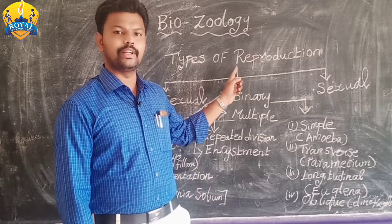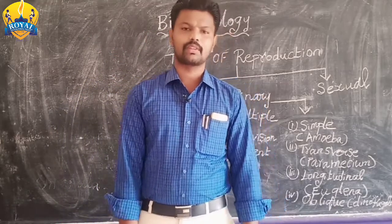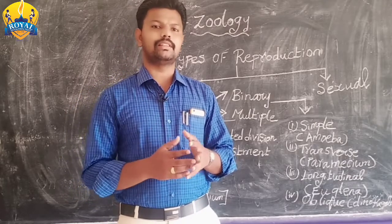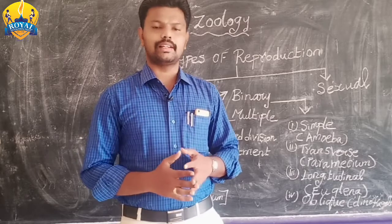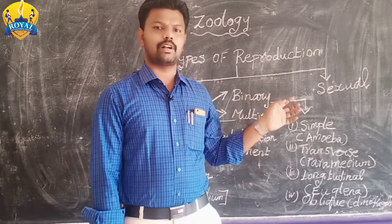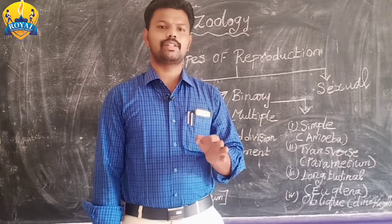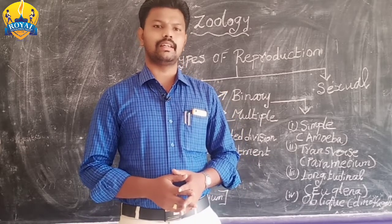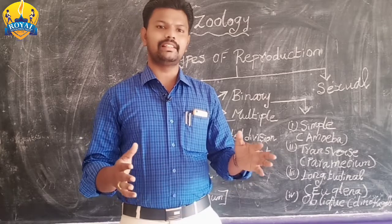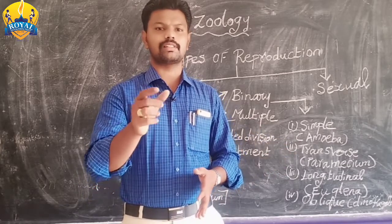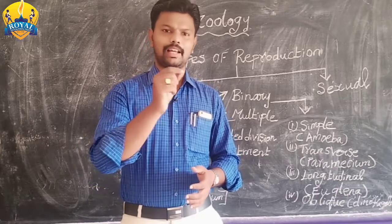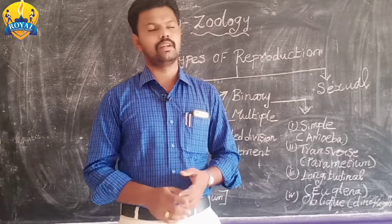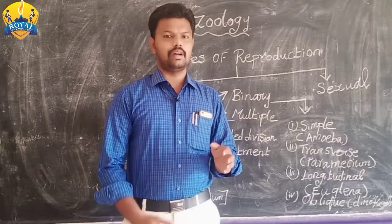The tenth system is the reproductive system, which is what we are going to study today. What is reproduction? Reproduction occurs in each and every organism, just like breathing or circulation. It is essential for every organism for their survival. Reproduction means producing young ones to maintain their species on Earth. Reproduction occurs in plants, animals, and single-cell organisms.